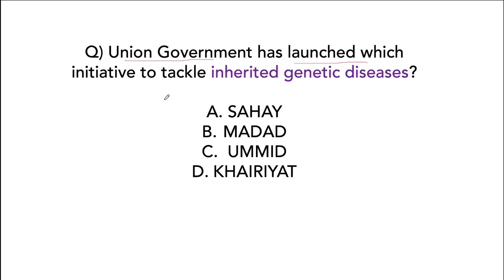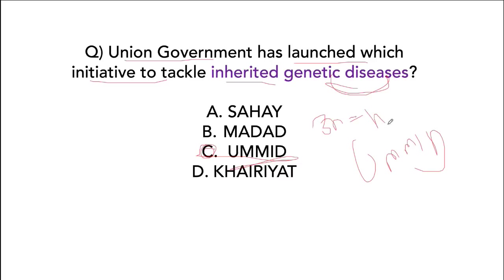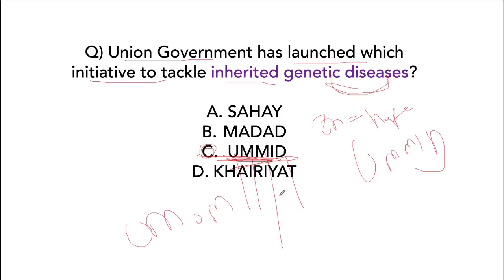The Union Government has launched UMMID — which means 'hope' in Hindi — to tackle inherited genetic diseases. Its full form is Unique Methods of Management and Treatment of Inherited Disorders.